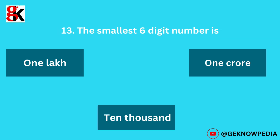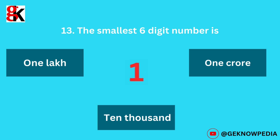Thirteenth question. The smallest six-digit number is: 1 lakh, 1 crore, or 10,000. The correct answer is 1 lakh.